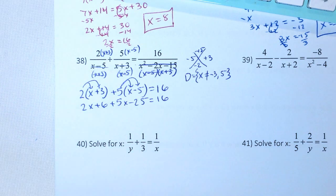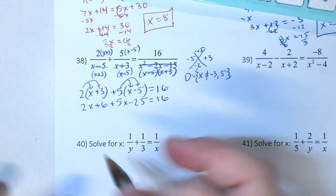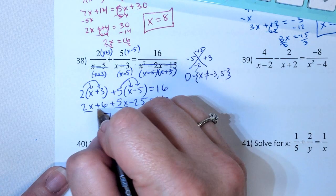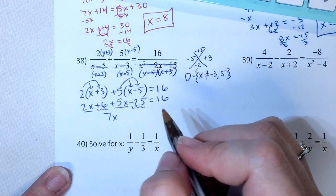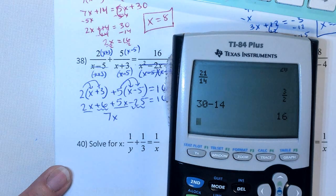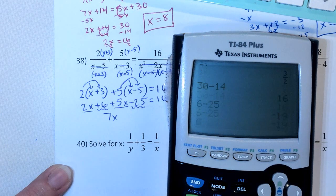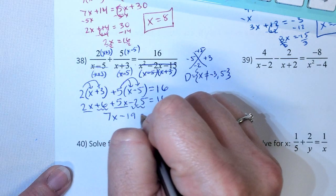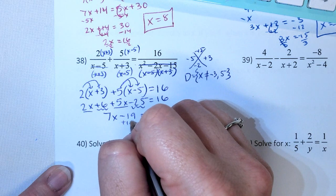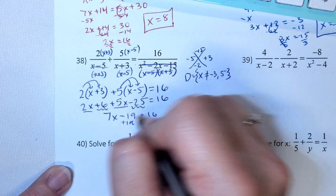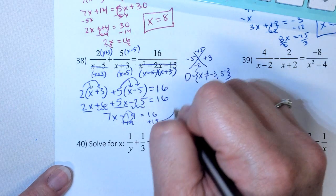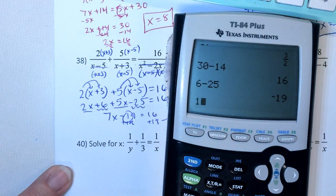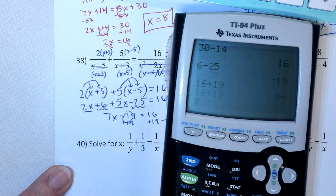So I simplified by multiplying. And I need to combine my terms. So 2x plus 5x is 7x. 6 minus 25 is going to be negative 19. So plus 19, plus 19, and I'm going to bring this over here. So I get 7x equals 16 plus 19, 35.